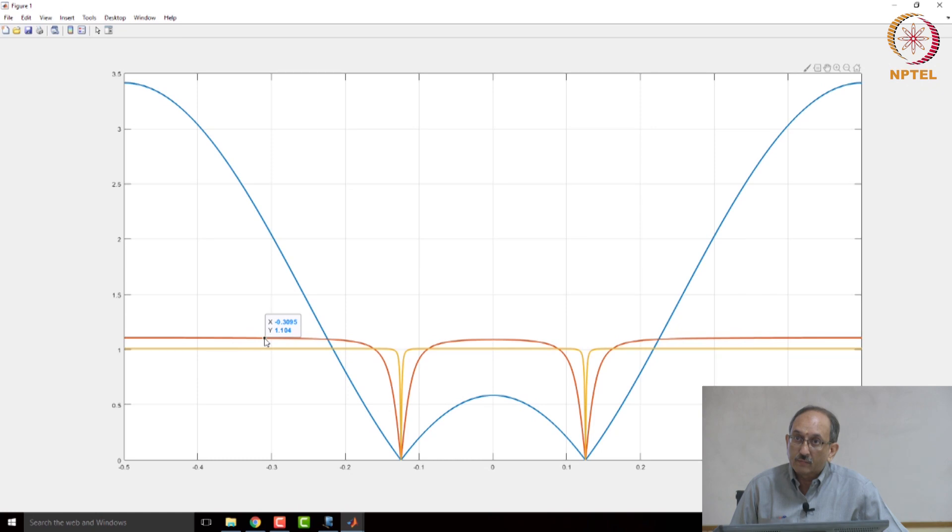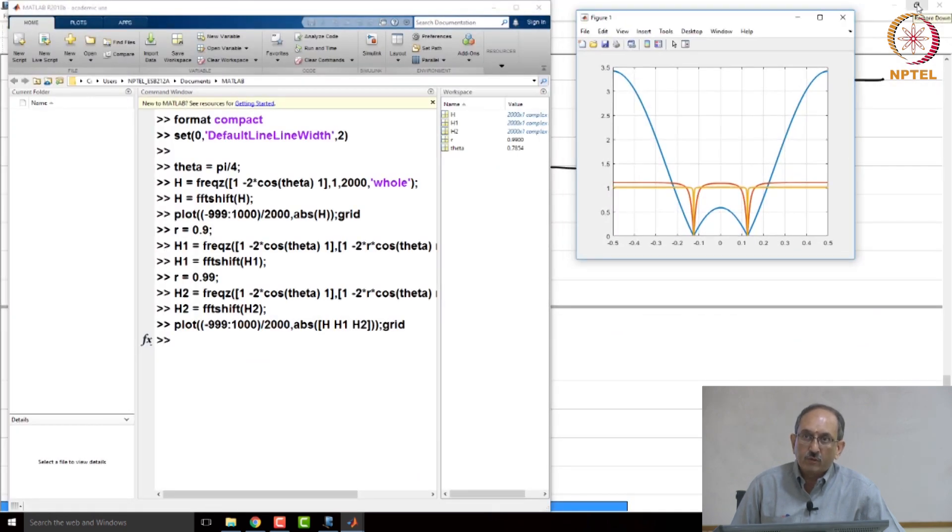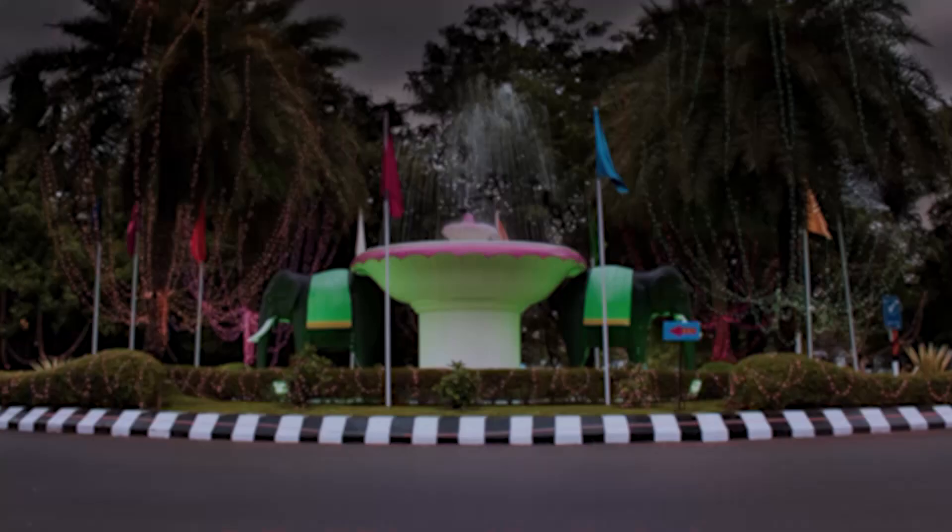So, the red one is 0.9 and the orange is 0.99. So, clearly you see the huge improvement in the frequency response. So, this is 0.99 is so much closer to the ideal notch filter. The notch exactly occurs at the same point as it should be, but when you go away from the notch, the response becomes so much better when you place the pole closer and closer. So, this very nicely illustrates the effect of adding the pole to boost the gain when you go away from the notch.